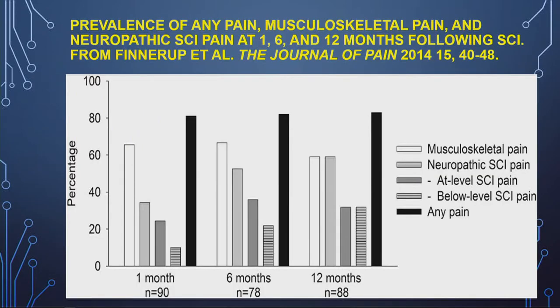If we look at prevalence, there are not many prospective studies that follow people from the onset of injury. This study from Finnerup in Denmark shows that below-level neuropathic pain has relatively low prevalence in the beginning and seems to slowly develop over the first year, whereas at-level pain stays relatively stable throughout. Overall, the prevalence of any pain is 80%, meaning people don't have only one kind of pain — they may have one, two, or three types simultaneously. That's why we have to classify it so each pain can get appropriate treatment.